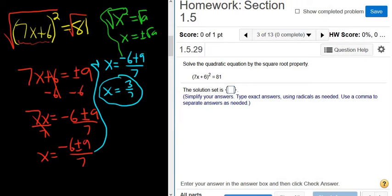And doing the minus, it's negative 6 minus 9 over 7. Negative 6 minus 9 is negative 15 over 7. And that is the final answer. I hope that made sense.